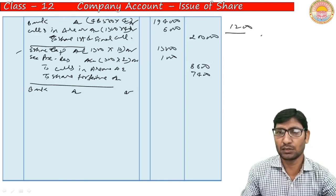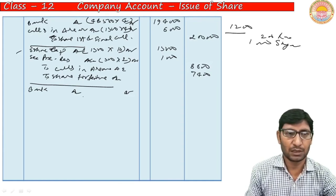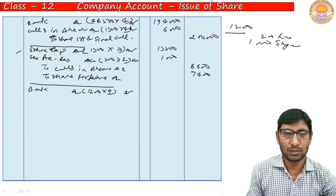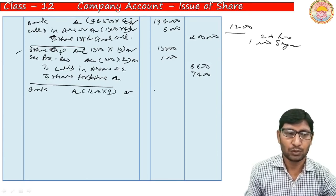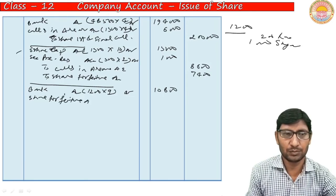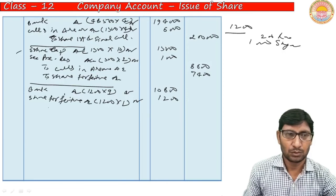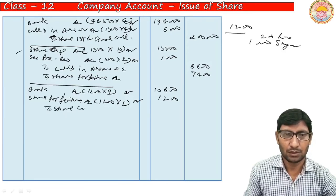For reissue of forfeited shares: 200 shares belong to Ram and 1,000 shares to Shyam — total 1,200 shares reissued. Bank Account Dr. = 1,200 × Rs. 9 (at 10% discount on Rs. 10) = Rs. 10,800. Forfeited Shares Account Dr. for deficiency = 1,200 × Rs. 1 = Rs. 1,200. To Share Capital = Rs. 12,000.